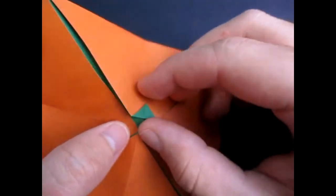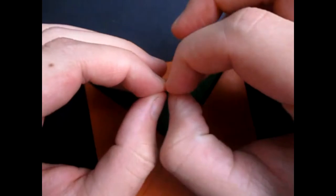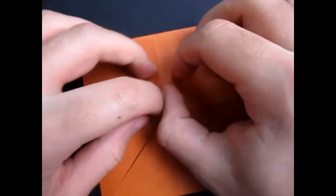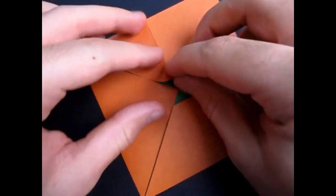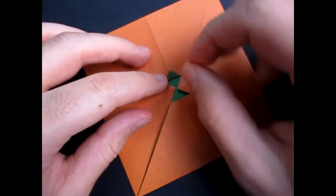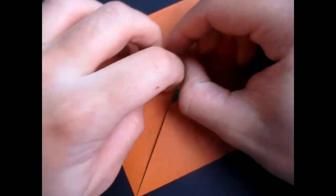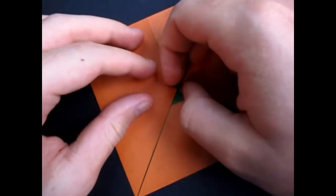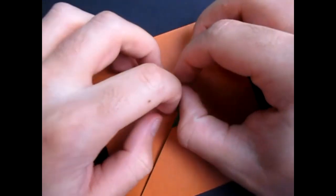And now you can unfold that and now fold it behind. Fold it inside like that. And repeat on this side. So fold it up. About a finger's width. And unfold it and fold it behind. Like that.